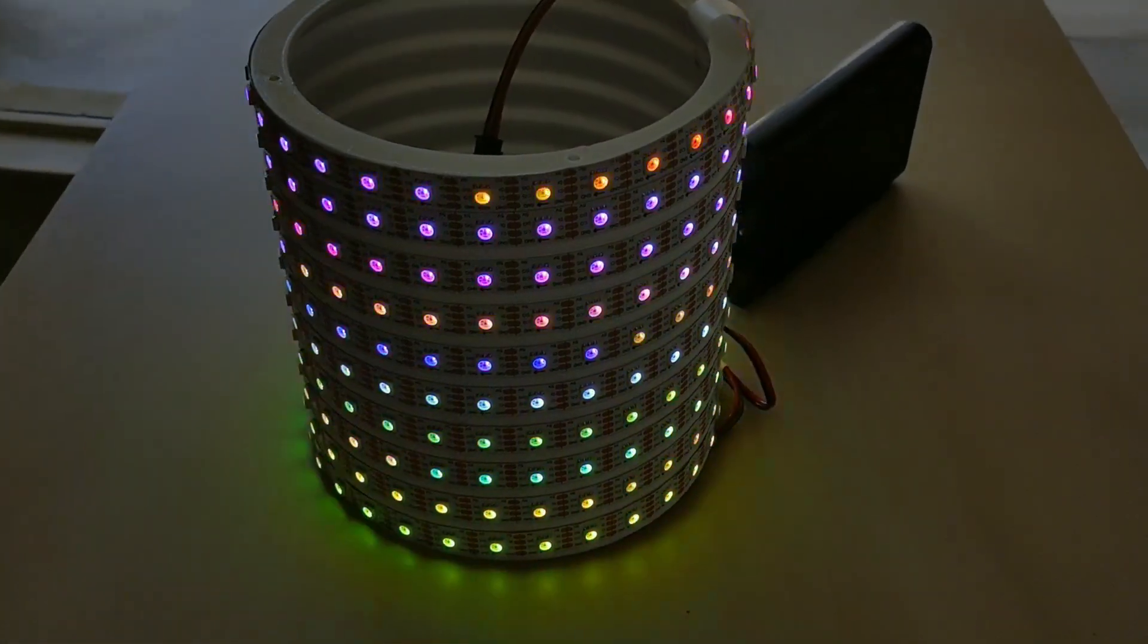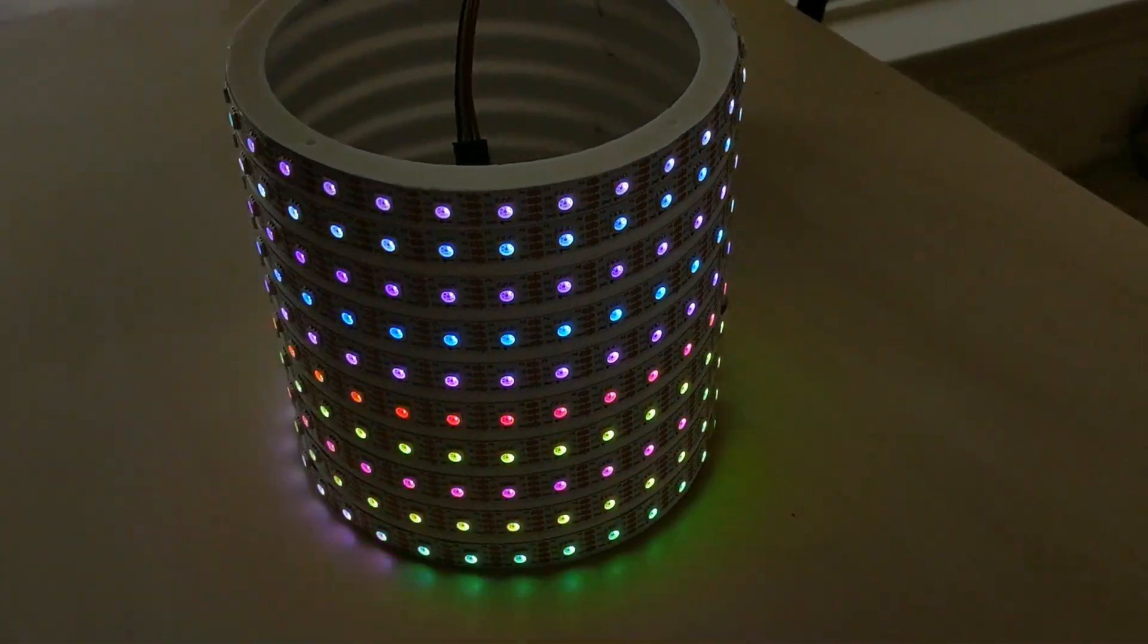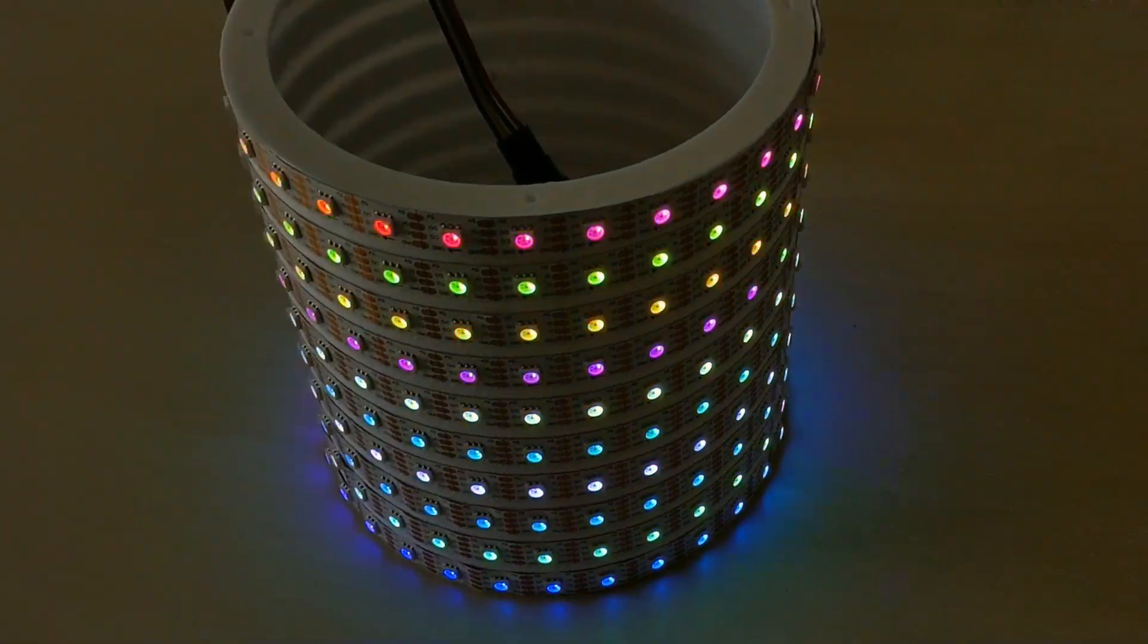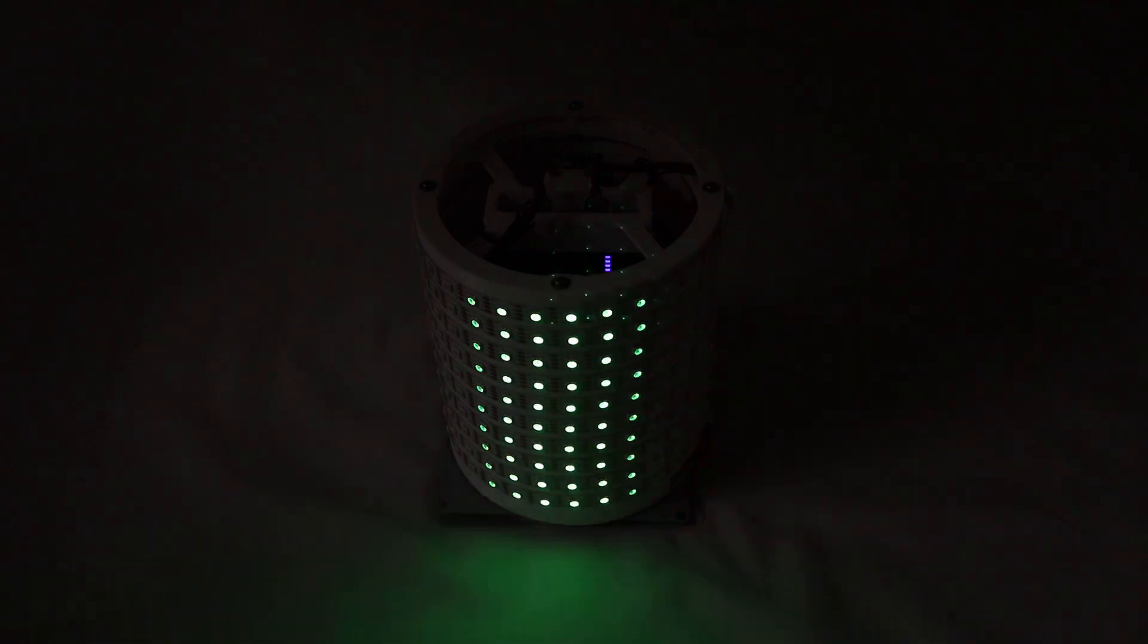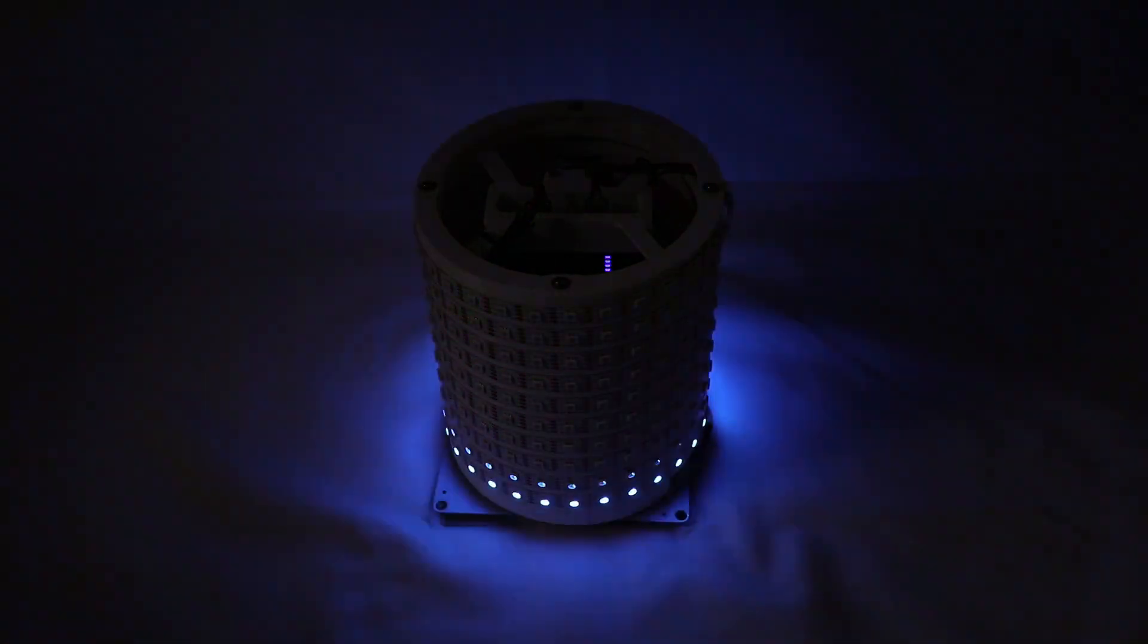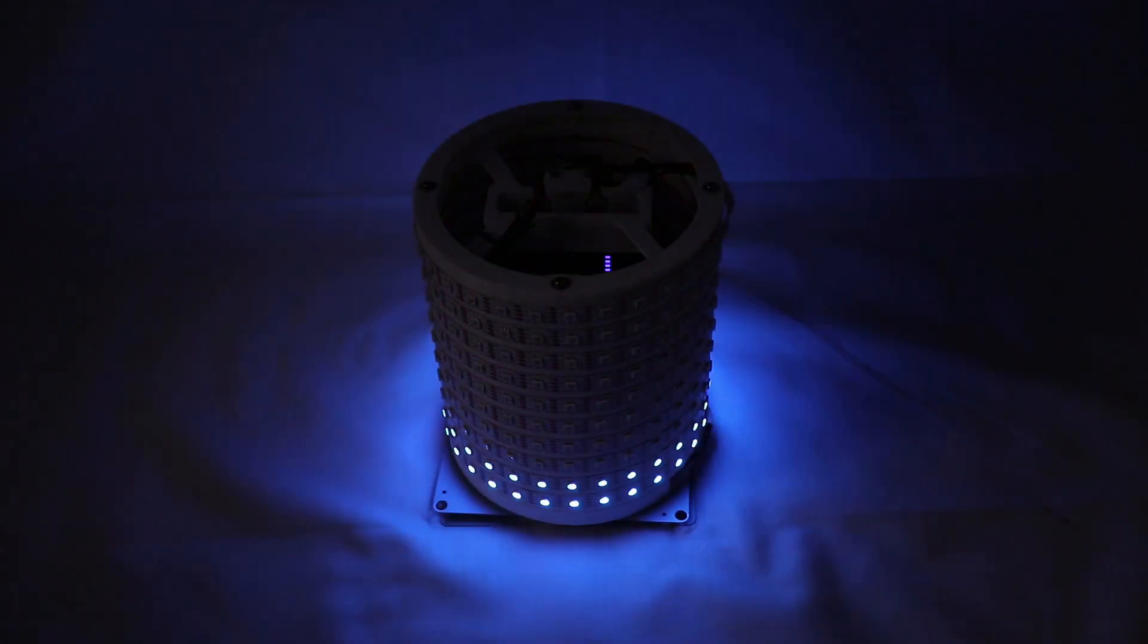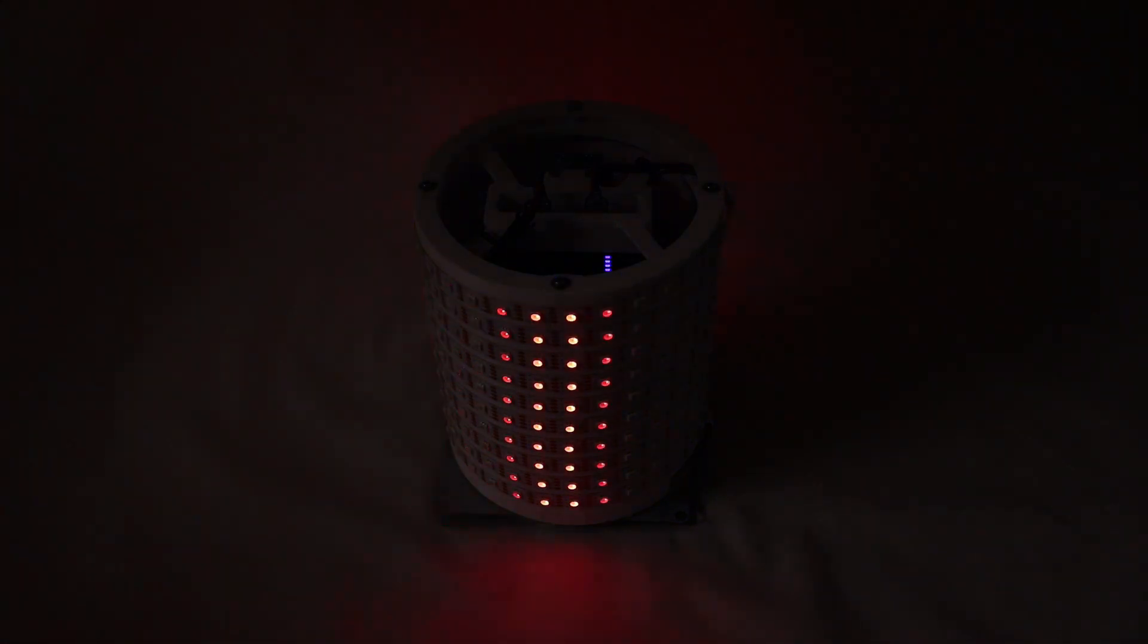Once assembled, I ran one of the pre-installed Pixel Blaze patterns just to make sure all the LED modules are blinking and working correctly. But I wasn't content with just blinking. I wanted to create something that took advantage of Pixel Blaze's ability to map individual LEDs to their location in three dimensions. To test this Pixel Mapper functionality, I created a test program that sweeps along each axis.